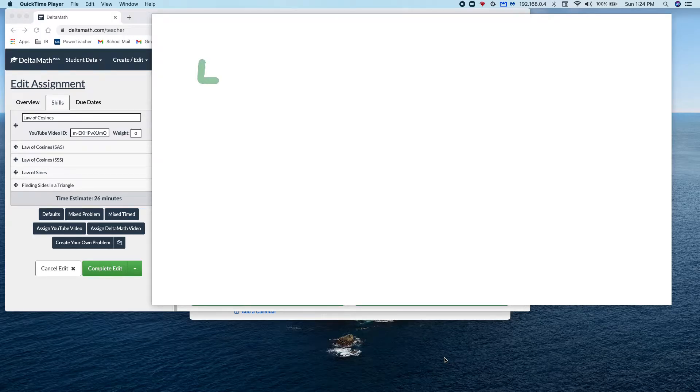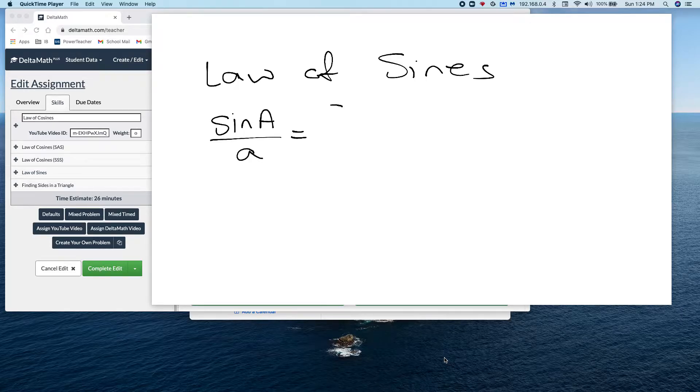The law of sines - we talked about that in the previous lesson. The law of sines: you can use the sine of A divided by a equals the sine of B divided by b equals the sine of C divided by c.